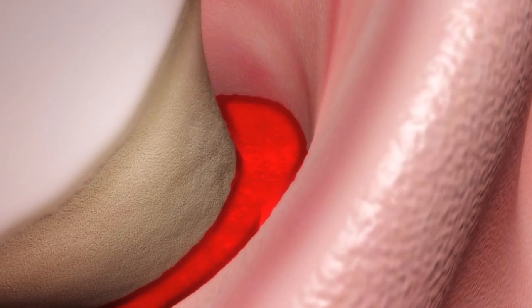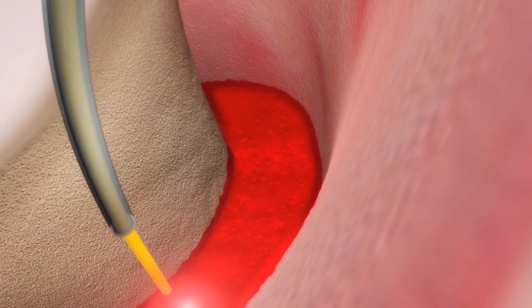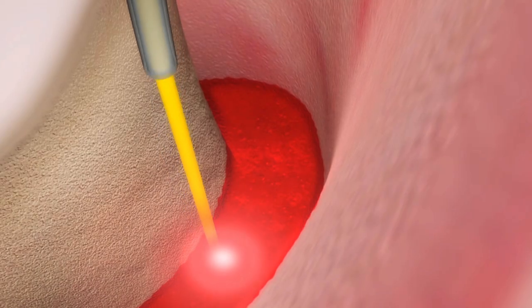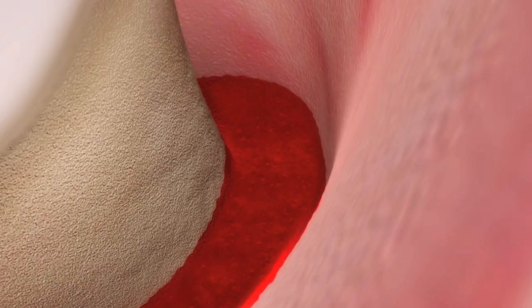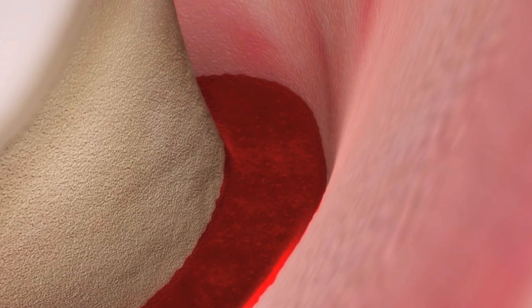Then, we again introduce ND YAG laser energy in the pocket to start development of the clot. We insert the tip all the way to the bottom of the pocket, then we fire the laser and draw out the tip until we see the blood start to get slightly darker. At this point, we stop lazing and start placing the collagen plug.